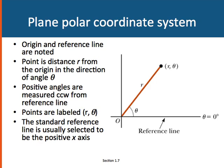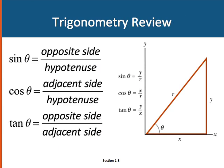On a plane polar coordinate system, instead of giving an x and y position, we're given a distance from the origin and an angle from the x axis. Positive angles are measured counterclockwise from whatever the reference line, usually the x axis. Points are given a number pair again, this time it's r and theta.